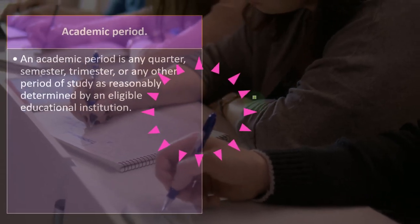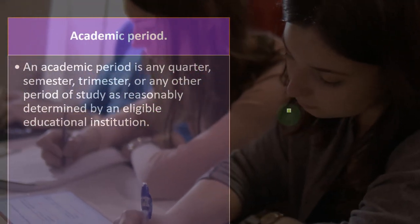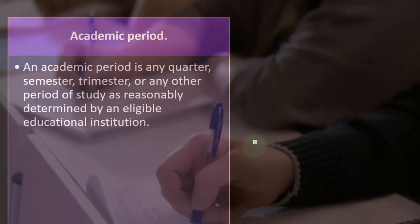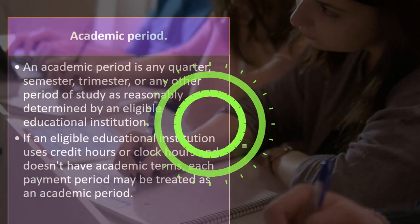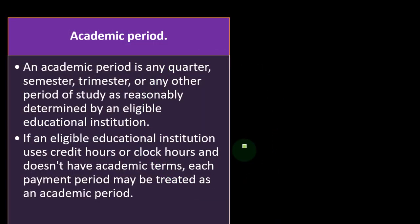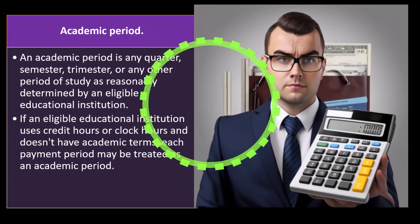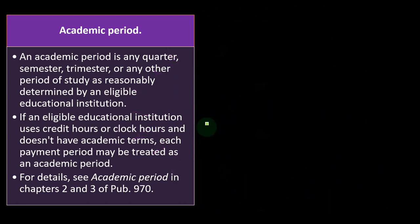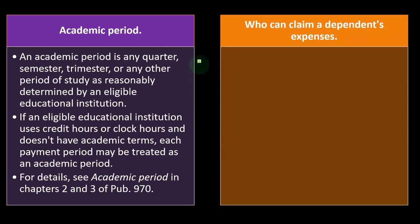An academic period is any quarter, semester, trimester, or any other period of study as reasonably determined by an eligible educational institution. If an eligible educational institution uses credit hours or clock hours and doesn't have academic terms, each payment period may be treated as an academic period. For details, see academic period in Chapters 2 and 3 of Publication 970. Academic periods are standardized to some degree, but different institutions have different periods — quarter, semester, and trimester are most common.